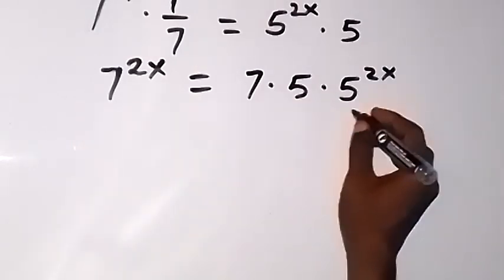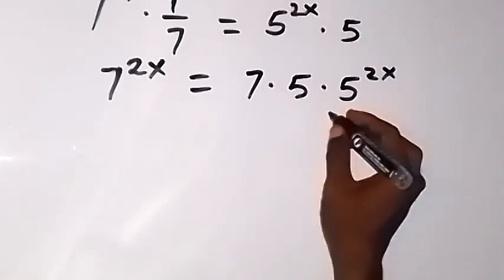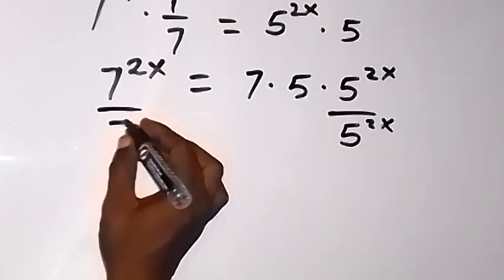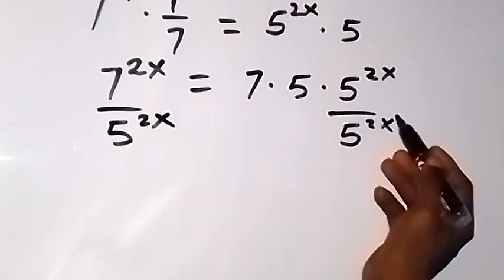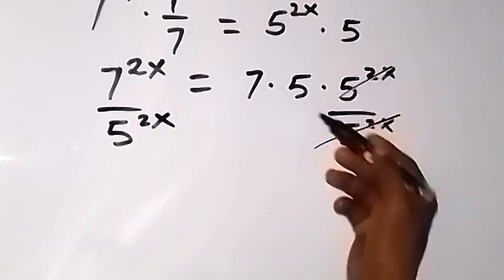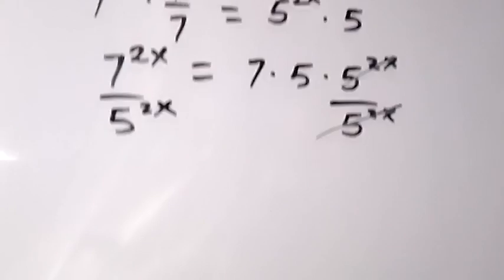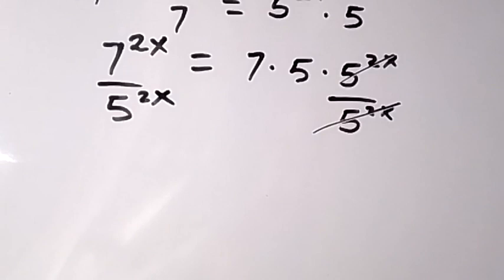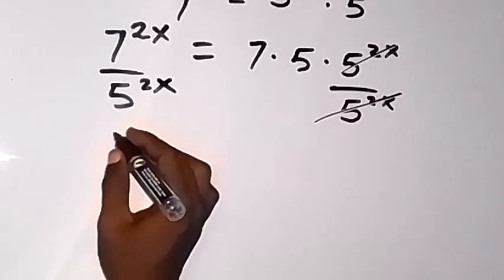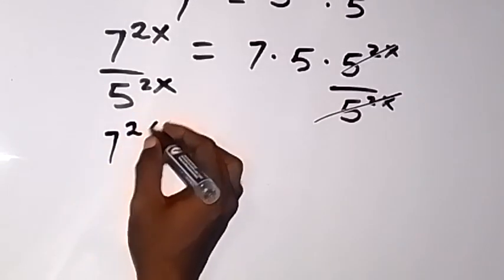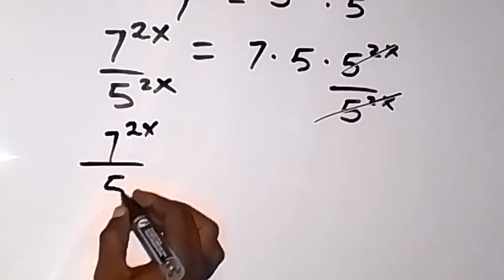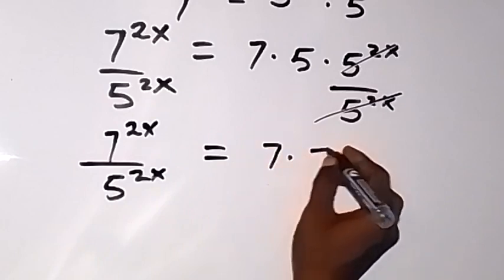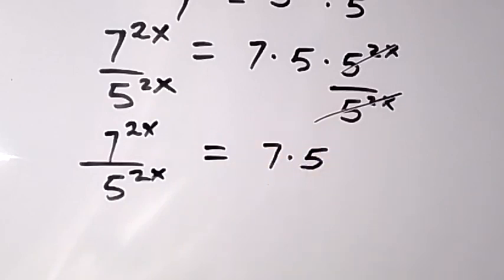So multiplying both sides by 7 gives us that. Then let's divide both sides by 5 raised to power 2x — dividing this side and also this side by 5 raised to power 2x. The 5 raised to power 2x terms cancel each other, and we have 7 raised to power 2x divided by 5 raised to power 2x on the left, and just 7 times 5 on the right.